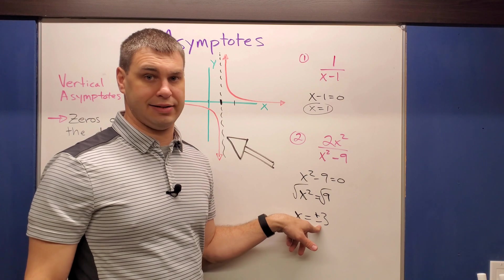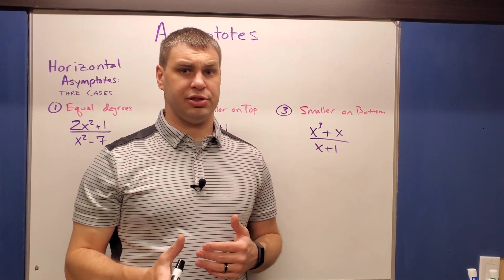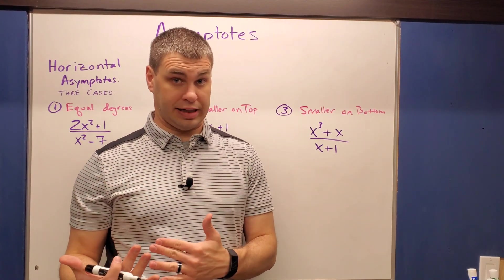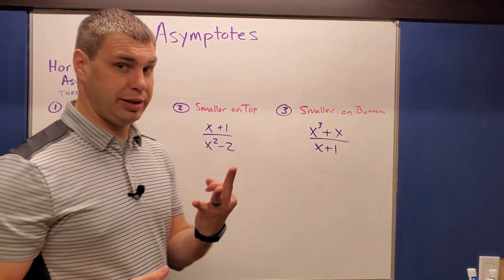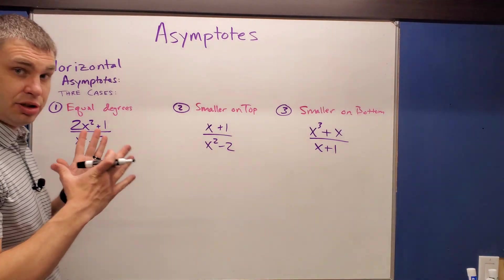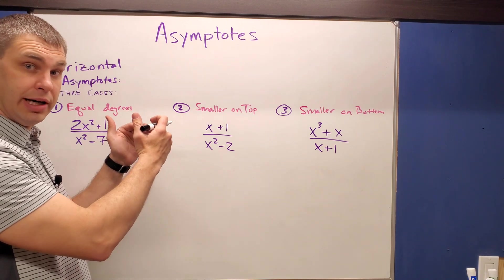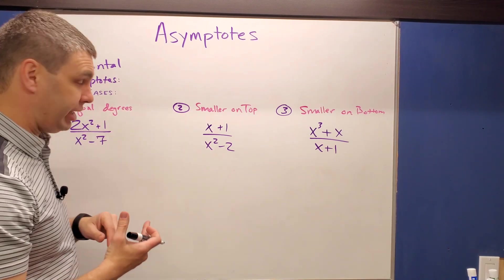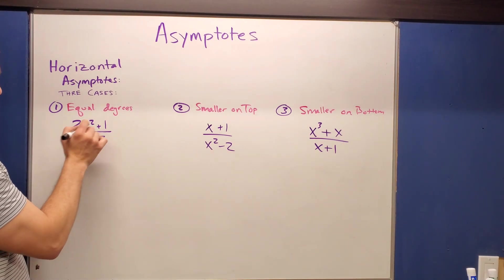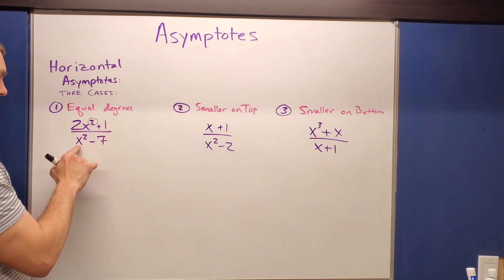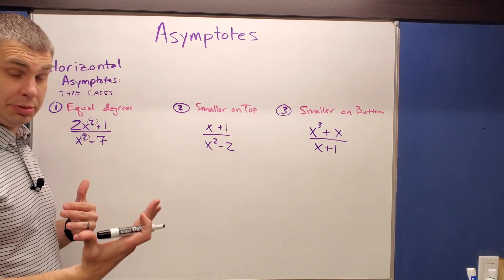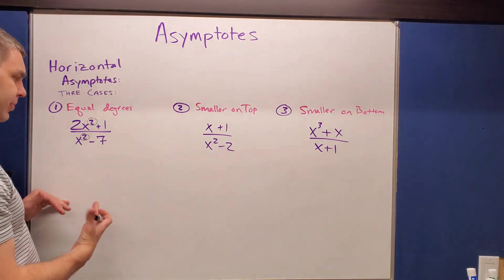Now let's look at horizontal asymptotes. Unlike vertical asymptotes, which use zeros of the denominator, horizontal asymptotes have three cases depending on the degree of the numerator and the denominator. In the first case, say the degrees are equal — for example, x squared on top and x squared on the bottom. The degree is just the largest exponent on the top and the bottom.